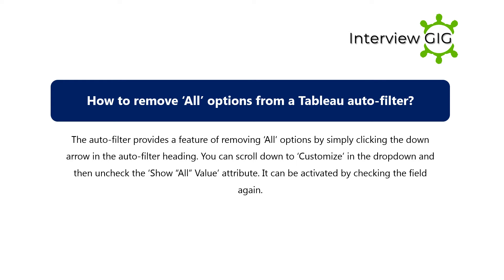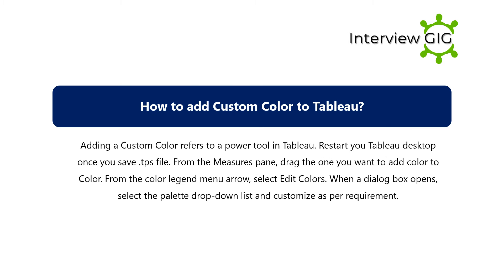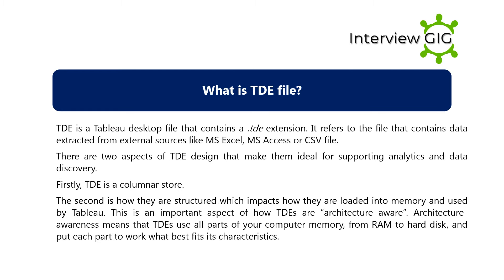How to add custom color to Tableau: Adding a custom color refers to a power tool in Tableau. Restart your Tableau Desktop once you save the .tps file. From the measures pane, grab the one you want to add color to. From the color legend menu arrow, select 'Edit Colors.' When a dialog box opens, select the palette dropdown list and customize as per requirement.